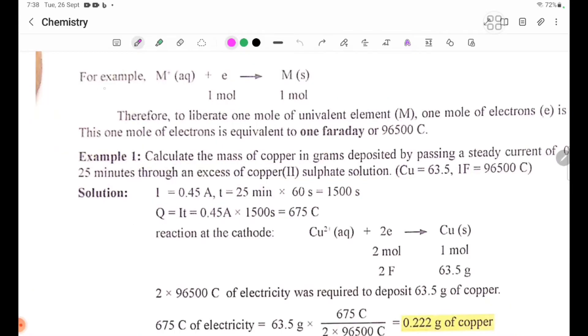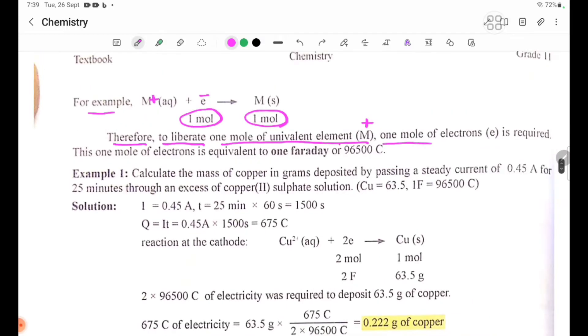For example, M+ (aqueous) plus electron forming M solid. Therefore, to liberate one mole of univalent element M, one mole of electrons is required. This one mole of electrons is equivalent to one Faraday or 96,500 coulombs.